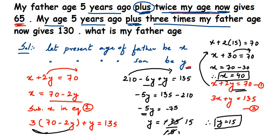So we got X equals 40 as the father's age and Y equals 15 as the son's age. I showed finding Y first and then X just to demonstrate we can find both ages. If you directly want the father's age, substitute in any one of the equations. I hope this is clear — if you have any questions or doubts, drop a comment below. Thank you so much for watching.